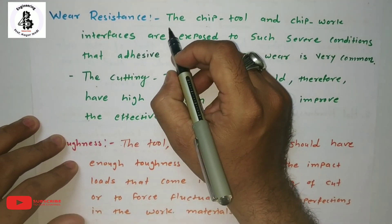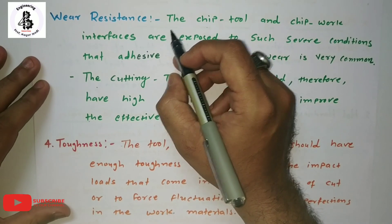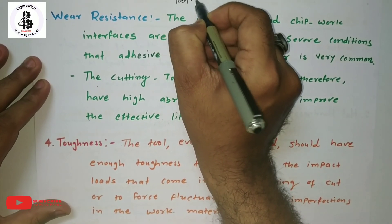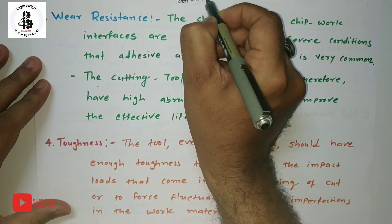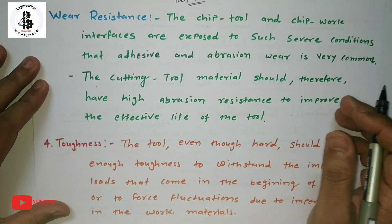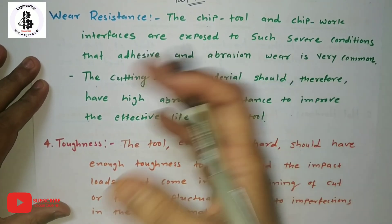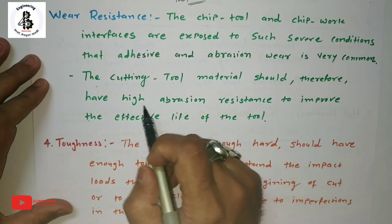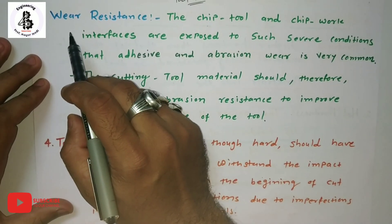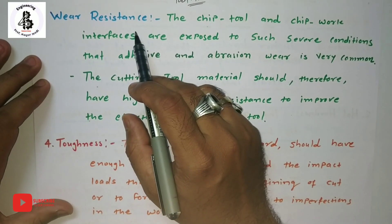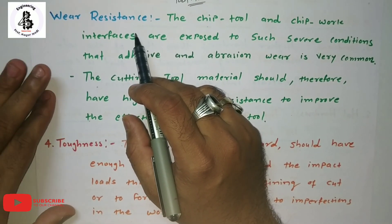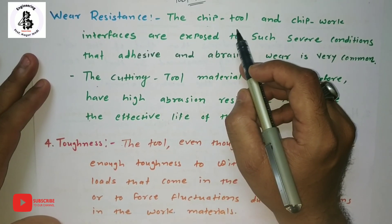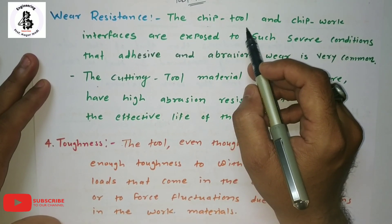The third characteristic is wear resistance. We are always focused on tool life — there is a separate video on tool life theory you can refer to. Wear resistance is an important property for cutting tool materials.